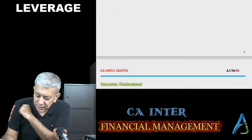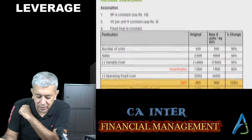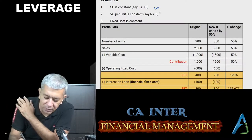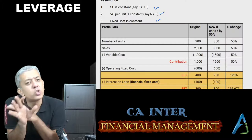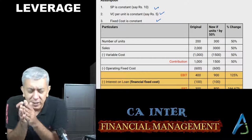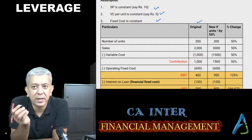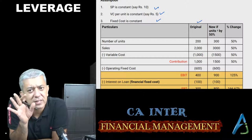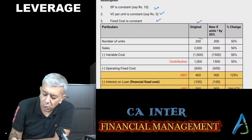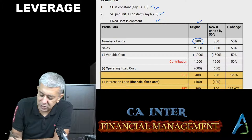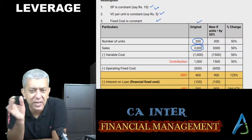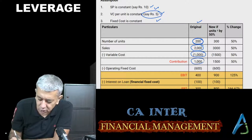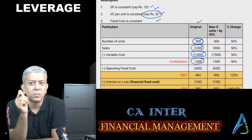Ab sab kuch ek income statement ke through bolne ka try karta hoon. Is income statement ke liye maine assume kiya hai ki selling price of the product is 10 rupees, variable cost is 5, and fixed cost — that I'll tell you in the table. Ek original column banaya. Company 200 units bechta hai, selling price is 10, so sales yahaan 2000 rupees ka aa jaata hai. Less variable cost: 200 units at variable cost of 5 rupees, so 1000. Contribution — sales minus variable cost — gives you contribution of rupees 1000.